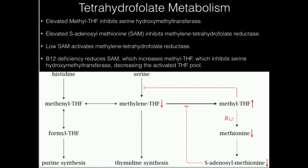B12 is required for the synthesis of methionine. About one third of Americans are estimated to be B12 deficient. When you're B12 deficient, you can't make methionine, so you also can't make SAM. When SAM levels sharply fall, that activates methylene tetrahydrofolate reductase, which transiently increases the methyltetrahydrofolate pool.